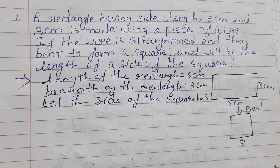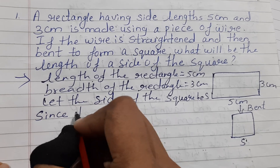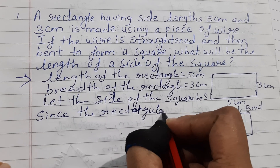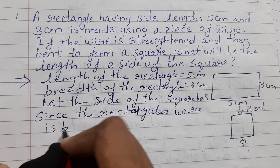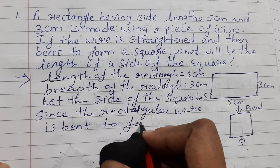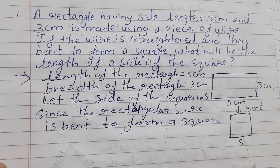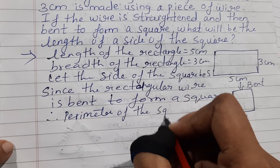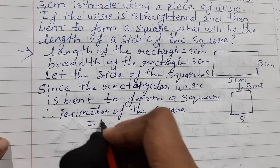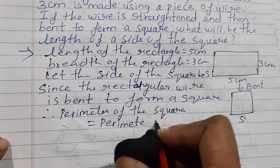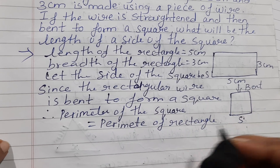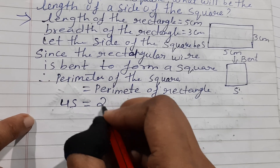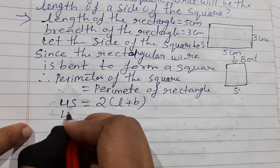Since the rectangular wire is bent to form a square, the perimeter of the square is equal to the perimeter of the rectangle. The formula for the perimeter of a square is 4s, and the formula for the perimeter of a rectangle is 2 times length plus breadth. We don't know the side, so we write 4s equals 2 times length plus breadth.